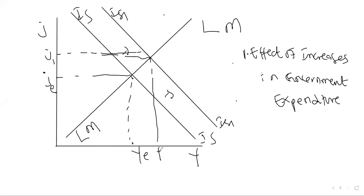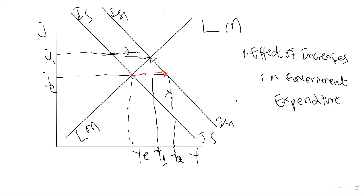The interest rate will rise from Ye to Y1, and income will rise from Ye to Y1. Now if government expenditure increases, income is going to increase at the same interest rate. Income will initially increase to this point Yt. The goods market is in equilibrium but the financial market is not at this equilibrium, because income has increased and money demand will increase.